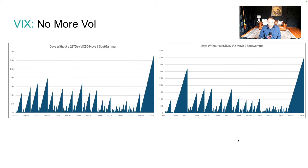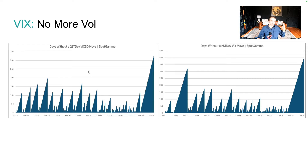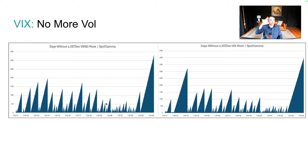We can actually quantify that using this data. On the left is the VIX nine-day versus the VIX on the right, showing the number of days we've had since a two-standard deviation move. The VIX nine-day should move a lot more, particularly in times of fear — it should jump a lot more when there is a crisis.